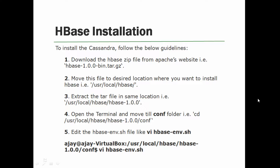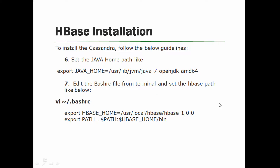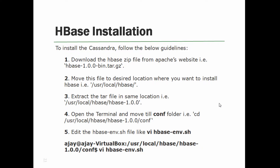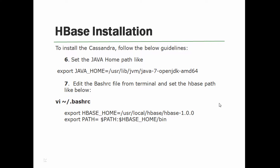You can set the Java path in the hbase-env.sh file. We will see this file when we move to the terminal after these steps. Once this file opens, you open it using vi hbase-env.sh in the editor and you set the Java home path as it is available on your system. I have set my Java home path that is available in /usr/lib/jvm, then the Java path.